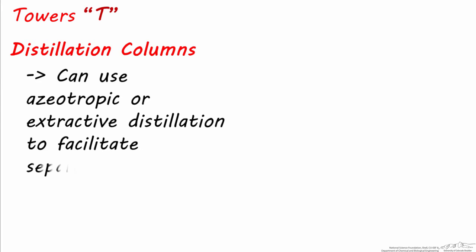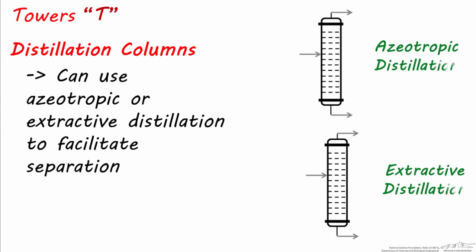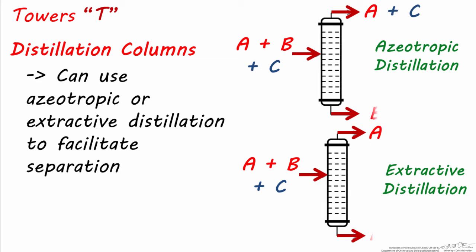By the way, you can also add chemicals to distillation to help facilitate separation, and this is called extractive and azeotropic distillation. Using these methods, you can add a component to the feed stream, shown here as C in blue, to help break an azeotrope or shift the bubble or dew point so that chemicals can be separated more easily. This additional chemical ends up in the distillate or bottoms and needs to eventually be separated from that stream.